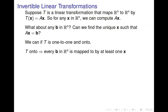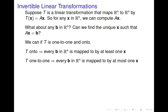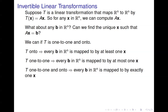If T is onto, then every b in R^n is mapped to by at least one x — so going backwards, there's always an x to go back to. If T is one-to-one, then every b is mapped to by at most one x — so there's only one vector to go back to. Combining both conditions: T is one-to-one and onto, so every b is mapped to by exactly one x, meaning there's a unique solution.